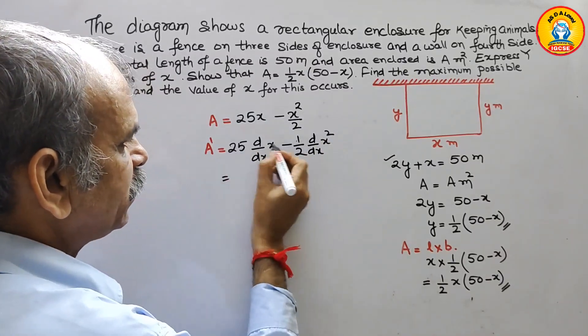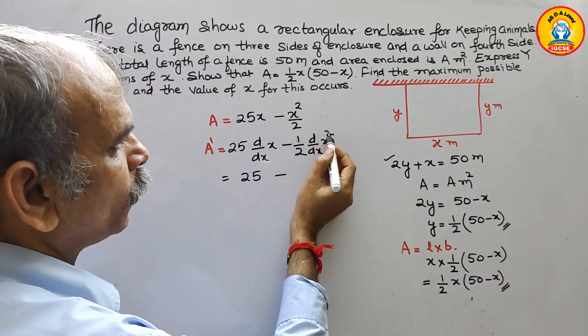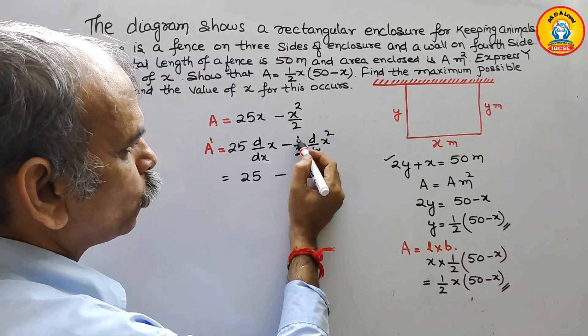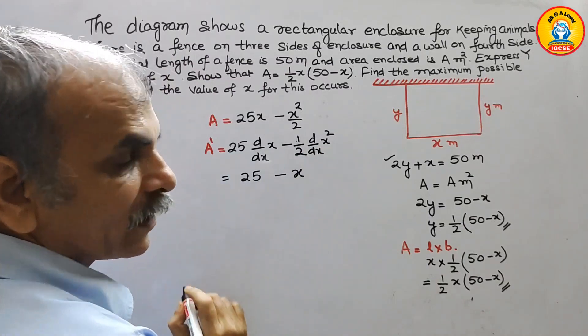So this is nothing but 25, and this will be minus 2 by 2 is 1. Therefore here you will get x.